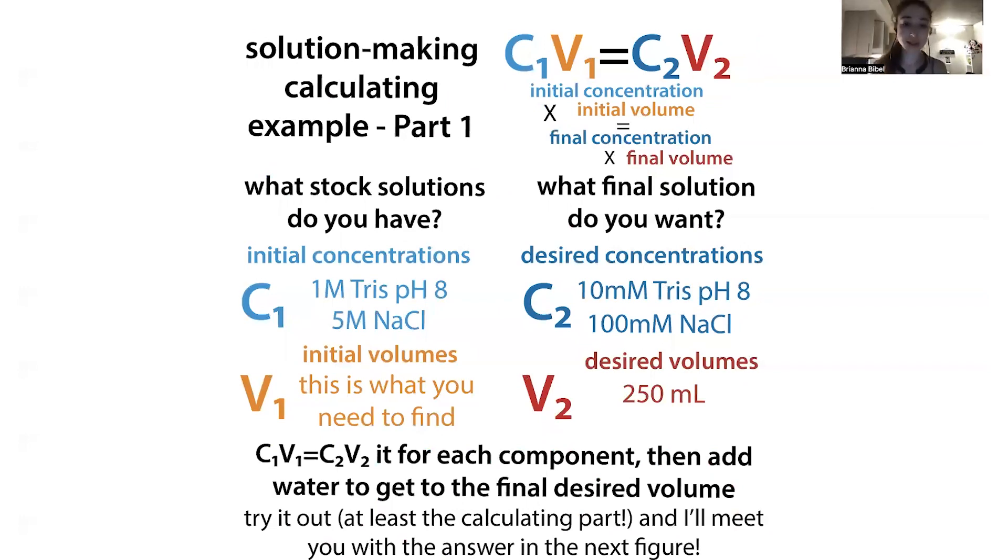That was a fun example, but let's get a little more practical. Say we want to make this buffer, this pH-stabilized salt water. We want to make a buffer that has 10 millimolar Tris pH 8 and 100 millimolar NaCl. We want to make 250 mils of it. As I mentioned, we like to keep these stock solutions. Say we have 1 molar Tris pH 8 and 5 molar NaCl - these will be our stock solutions. We want to figure out how much of the initial volume, how much of each of these do I need in order to make this final 250 mils of this working solution?